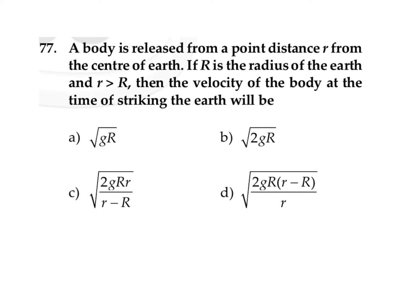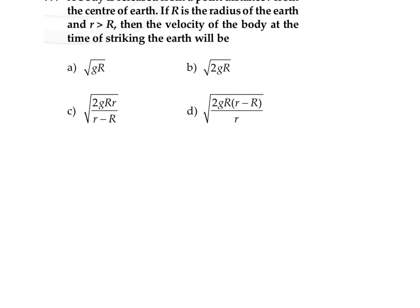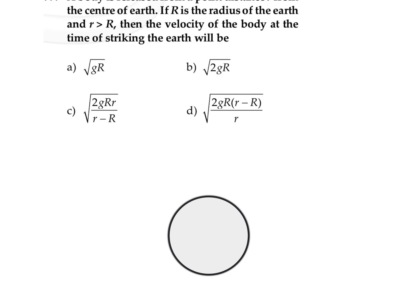In this question, it is given that a body is released from a point at distance r from the center of the Earth. Here, small r is the distance from the center, capital R is the radius of the Earth, and r is much greater than R. We need to find the velocity of the body at the time of striking the Earth.